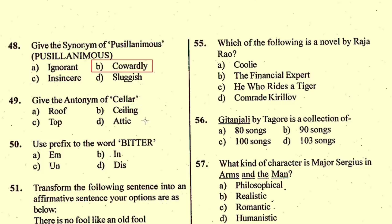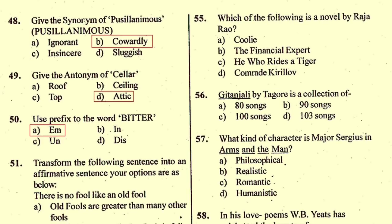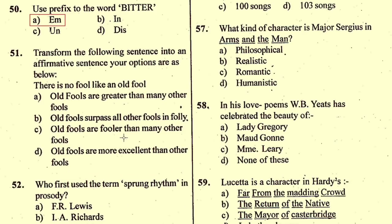Question number 49: Give the antonym of 'cellar.' The antonym is 'attic', A-T-T-I-C, given in option D. 'Cellar' and 'attic' are opposites. Question number 50: Use a prefix with the word 'bitter.' The right prefix is 'em-', making 'embitter', given in option A. Question number 51: Transform the sentence into an affirmative — the right option is B: 'Old fools surpass all other fools in folly.'